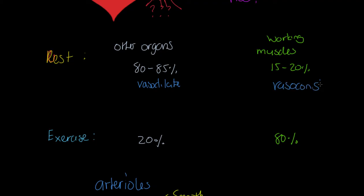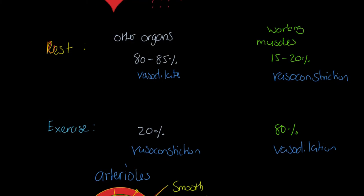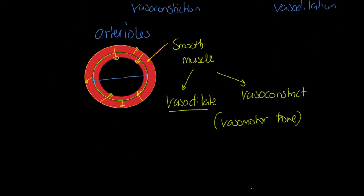When we start to exercise, exactly the opposite happens. We get vasoconstriction leading to the other organs - increasing pressure and decreasing blood flow - and we get vasodilation to the working muscles, so more of the cardiac output can be redistributed to that environment. This simply happens through the dilation and constriction of these arterioles.